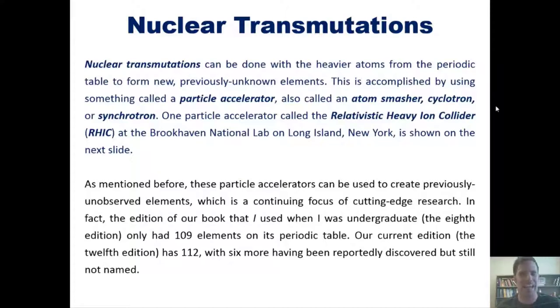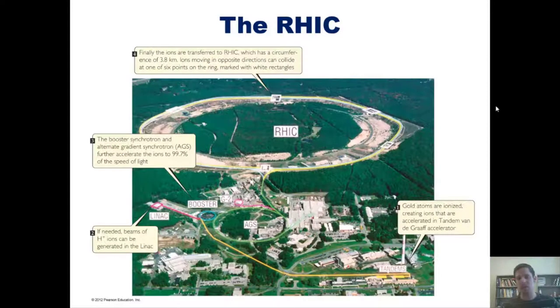One particle accelerator called the relativistic heavy ion collider, or RHIC, at Brookhaven National Lab on Long Island, New York is shown on the next slide. These particle accelerators can be used to create previously unobserved elements, which is a continuing focus of cutting-edge research. In fact, the edition of our book that I used when I was an undergraduate, which happened to be the 8th edition, only had 109 elements.